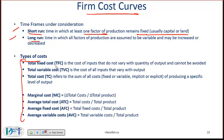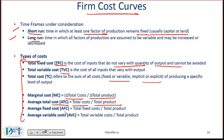These are the different types of costs. Total fixed cost is the cost of inputs that do not vary with the quantity of output. Total variable cost is the cost of all inputs that vary with output. Total cost is the sum of all costs — fixed or variable, implicit or explicit. Marginal cost is the additional cost for producing one more unit — the change in total cost over the change in total product. Average total cost is total cost over total product. Average fixed cost is total fixed cost over total product; as you produce more, average fixed cost comes down. Average variable cost is total variable cost over total product.